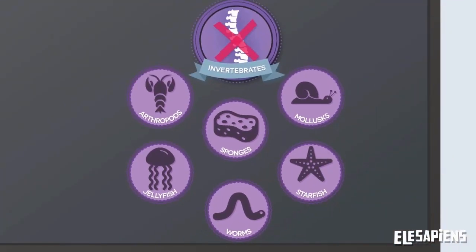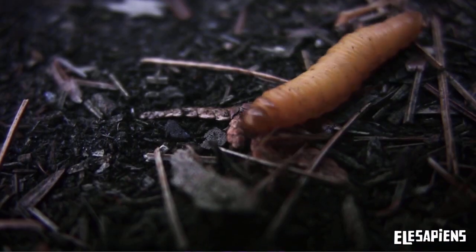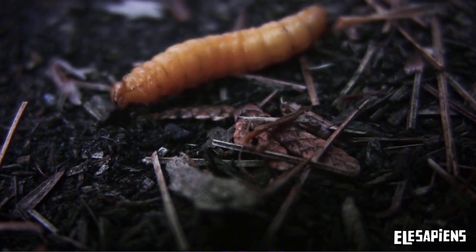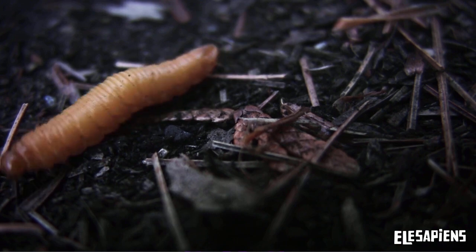And let's not forget about a group of invertebrates we are all familiar with: worms — those terrestrial or aquatic animals with an elongated body and without legs.